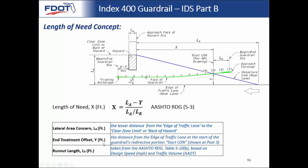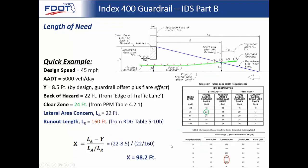The end treatment offset Y is the distance at the edge of traffic lane at the start of the guardrail's redirective portion. The guardrail has redirective capability after post 3 — that's true of most guardrail configurations. The runout length LR comes from the AASHTO Roadside Design Guide table 5-10B, based on the design speed in miles per hour and the traffic volume ADT. LR helps define the departure line triangle. We'll give a quick example before we get into the actual length of need program, where we'll show more complex examples.